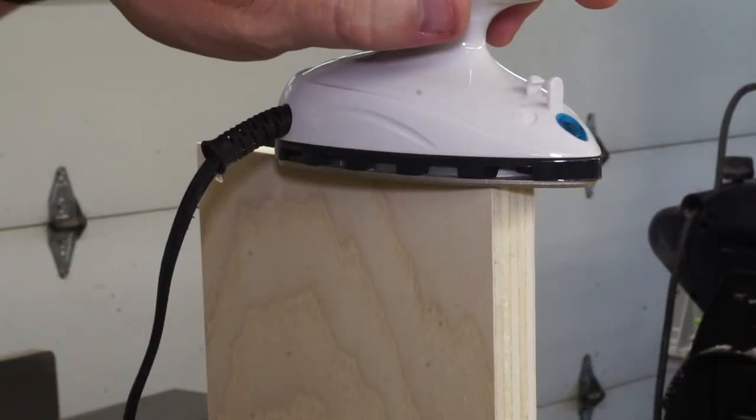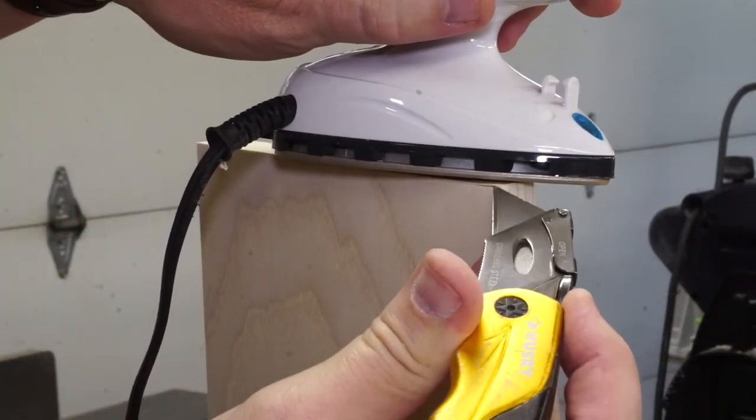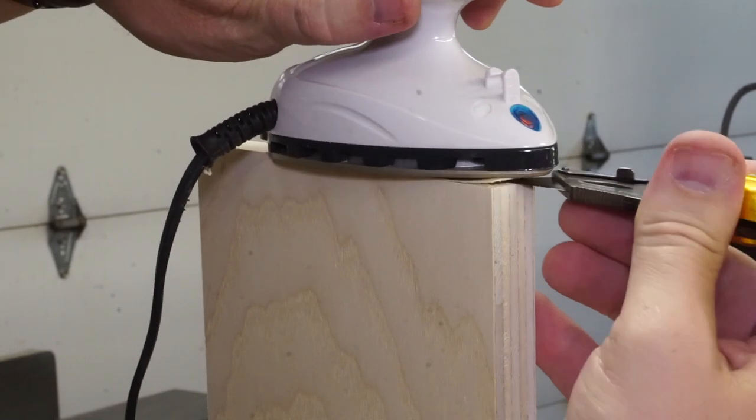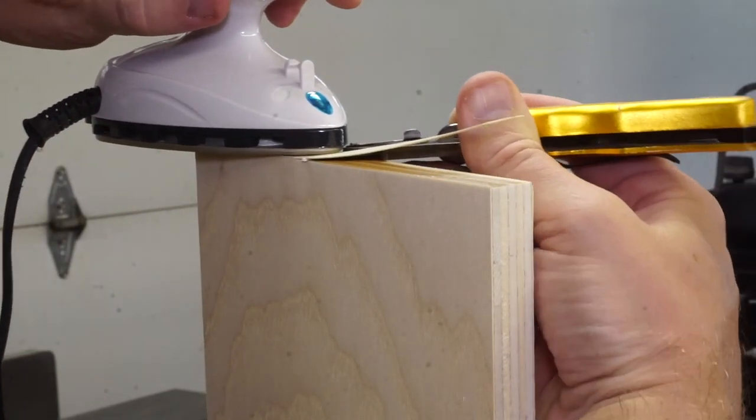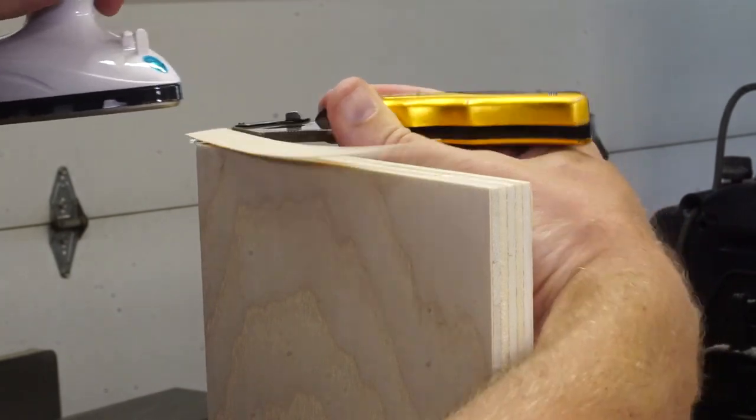Here you can see I accidentally put edge banding on the end of one of the shelves, and then realized it would not be needed as this part is butted up against the side piece. Fortunately, it comes off just as easy as it goes on.